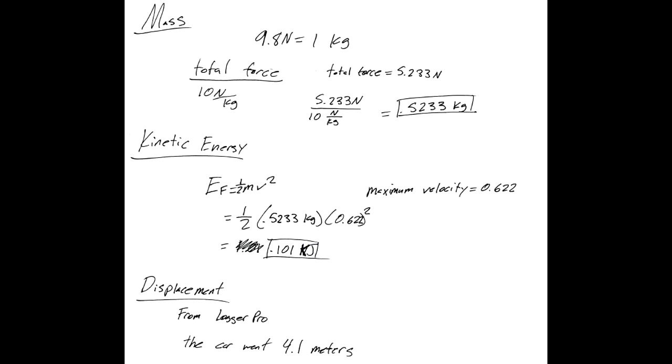For mass, we know that 9.8 newtons equals 1 kilogram, and our total force equals 5.233 newtons. So we divide our total force by 10 newtons per kilogram, and we get 0.5233 kilograms. Our maximum velocity equals 0.622 meters per second.